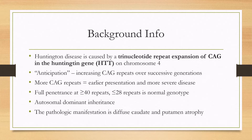The disease can also progress faster. There is full penetrance, meaning full expression of the phenotype, at 40 or more repeats. 28 or fewer repeats is considered normal. There is a gray zone in the mid to upper 30s where you can have incomplete penetrance.